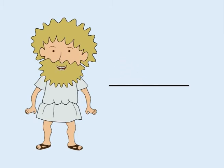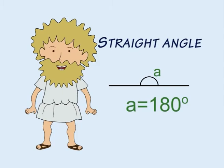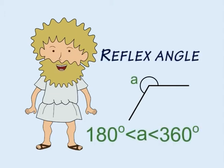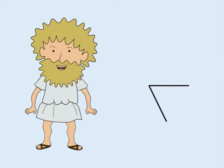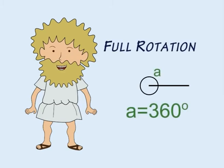An angle that measures exactly 180 degrees is called a straight angle. An angle that is greater than 180 degrees but less than 360 degrees is called a reflex angle. An angle that measures exactly 360 degrees is called a full rotation.